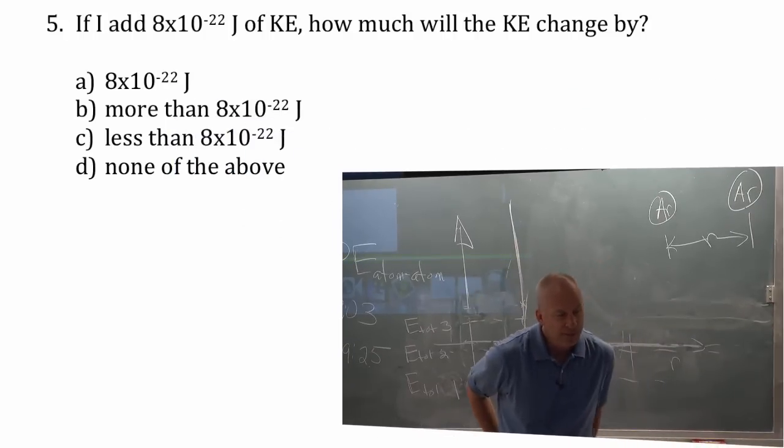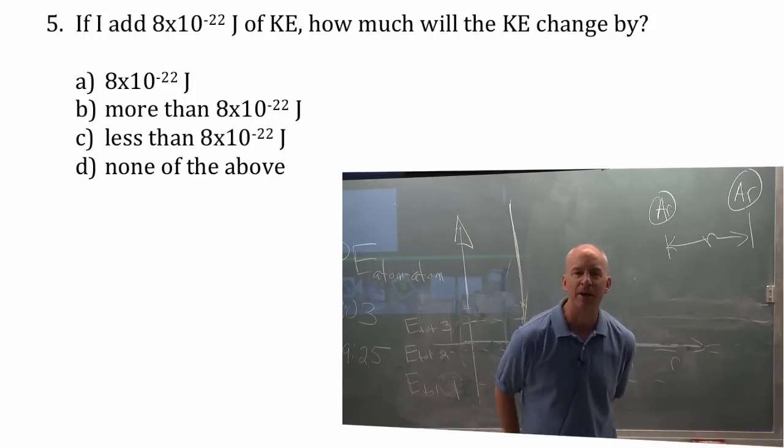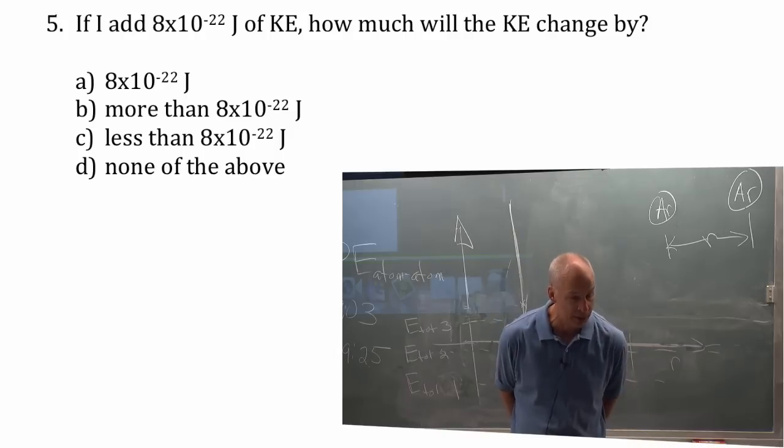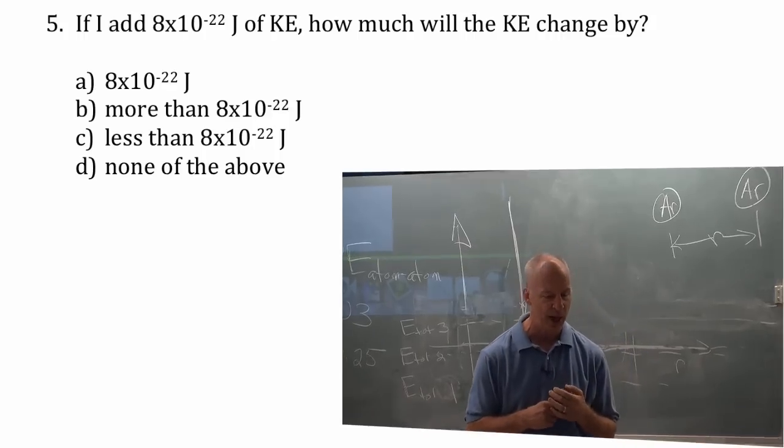Last question. If I add energy, kinetic energy, 8 times 10 to the minus 22 joules, that's going to be a small amount of kinetic energy for this hundred atoms. If I add that much kinetic energy to this hundred atoms, how much will the average kinetic energy change by?